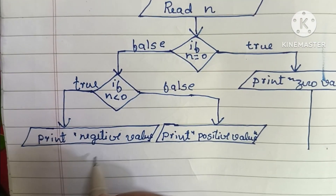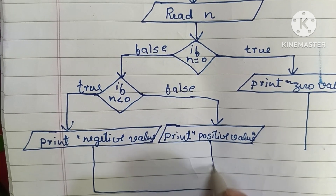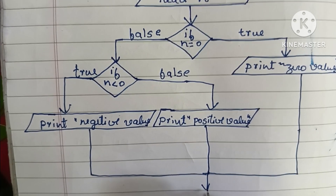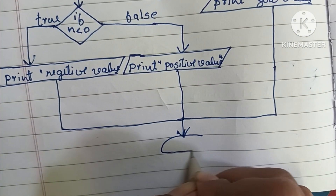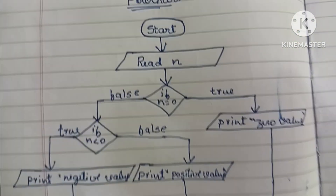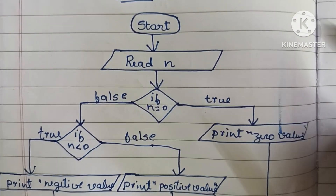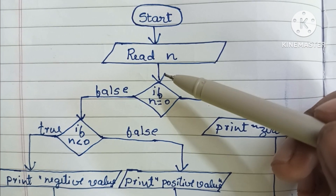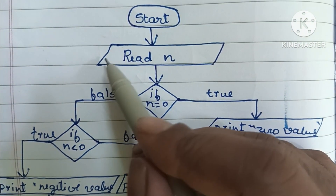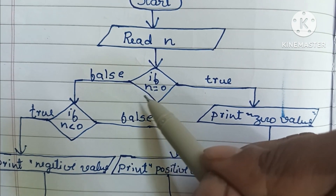Finally, we combine all paths to the stop statement to complete the flowchart. This is the flowchart to find whether a given number is positive, negative, or zero. It starts with the start statement in an oval; we read N in a parallelogram; comparisons are done within a diamond shape.